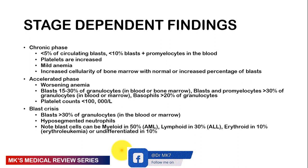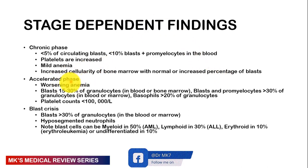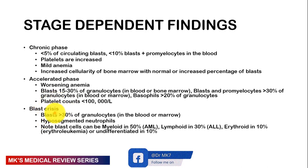Stage-dependent findings: in the chronic phase, less than 5% circulating blasts, platelet count may be increased, mild anemia, and increased bone marrow cellularity. In the accelerated phase: worsening anemia, blasts between 15 to 30% of granulocytes, blasts plus promyelocytes greater than 30%, basophils greater than 20%, and platelet count less than 100,000. In blastic crisis, blasts are greater than 30% of granulocytes in bone marrow or blood, with hyposegmented neutrophils. Blast cells can be myeloid in 50%, lymphoid in 30%, erythroid in 10%, or undifferentiated in 10% of cases.